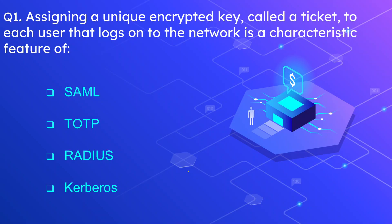Question number 1: Assigning a unique encrypted key called a ticket to each user that logs on to the network is a characteristic feature of which of the following? The options are SAML, TOTP, RADIUS, and Kerberos. The correct option is Kerberos.